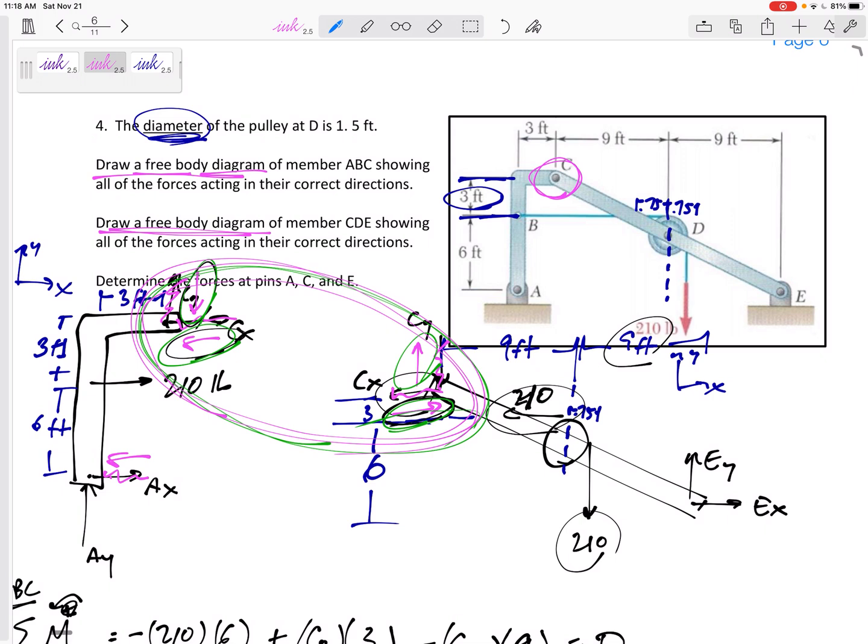But if I couldn't, then I would look at, okay, is this section, does this piece have three unknowns? Or does this piece have three unknowns? And I would definitely start there. If one of the pieces only has three unknowns, definitely start there.